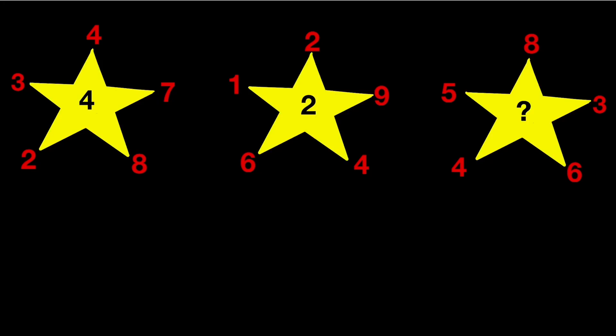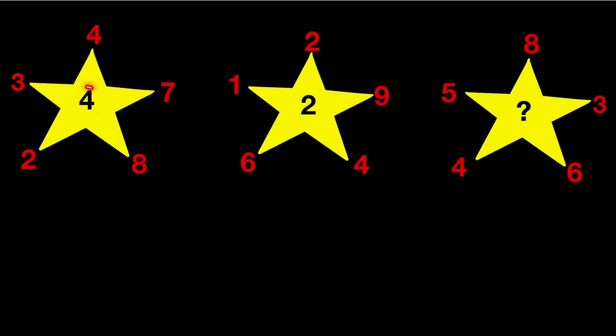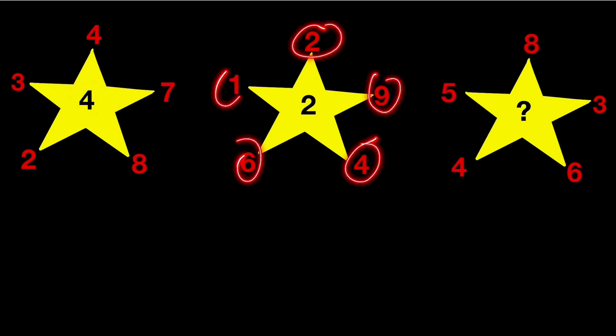Hey everyone, welcome back to another interesting video. In this video we are going to solve a very interesting puzzle, which is here on the board. We have these star shapes with some numbers: 4, 3, 2, 8, 7, and the central number is 4. In the second star it is 2, 9, 4, 6, 1.